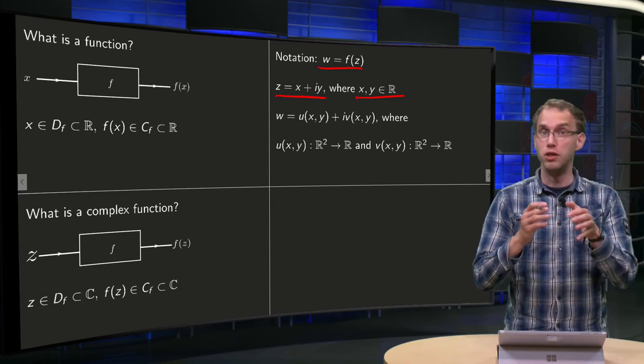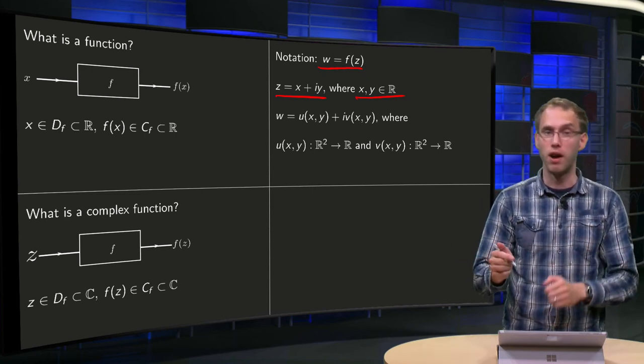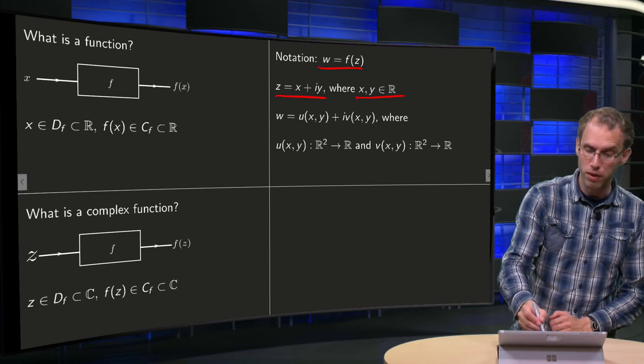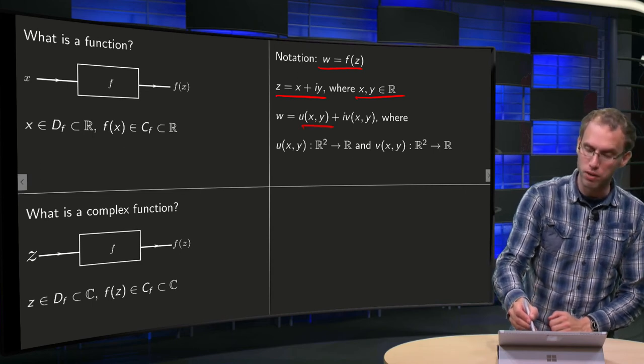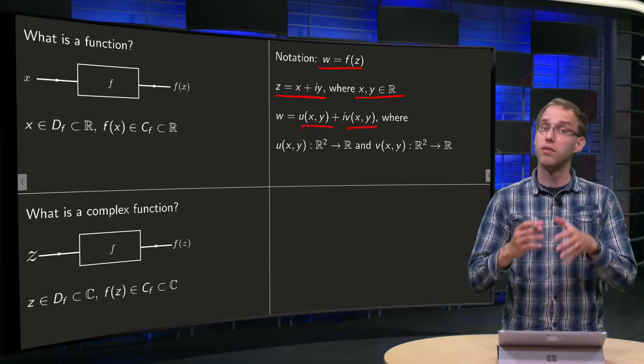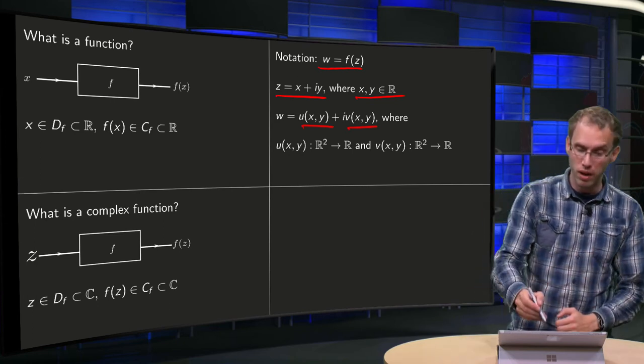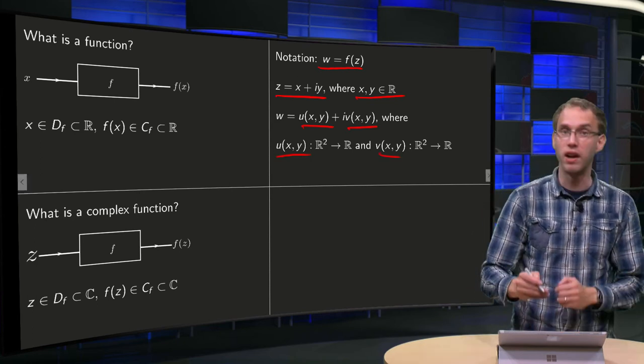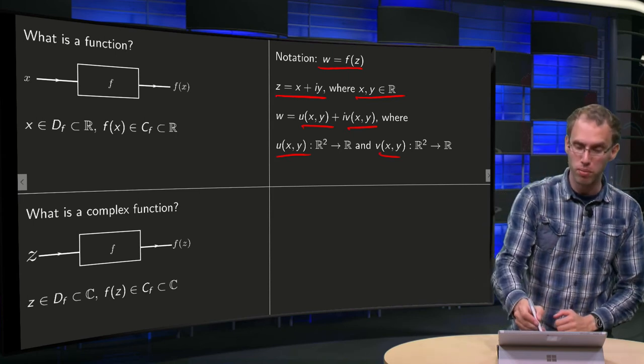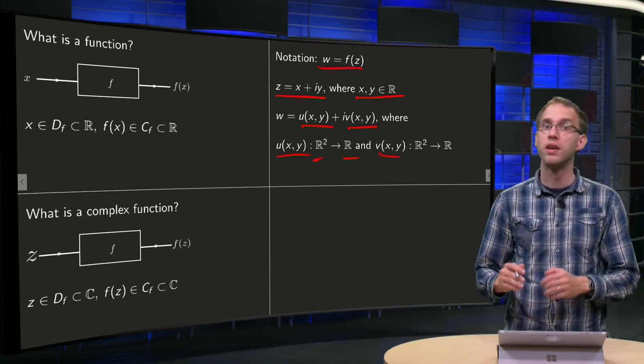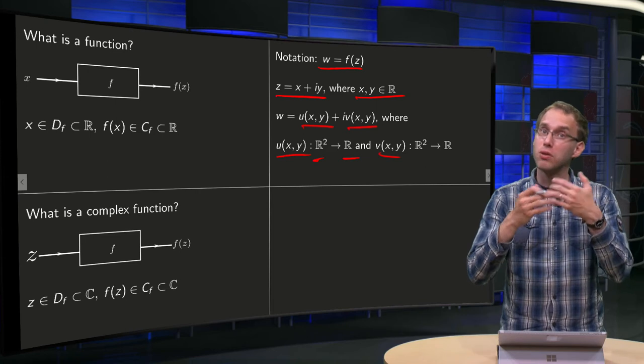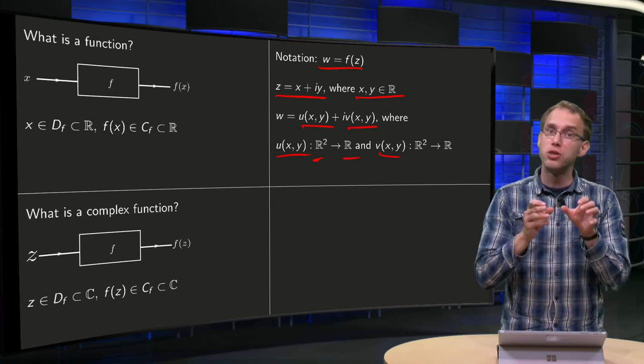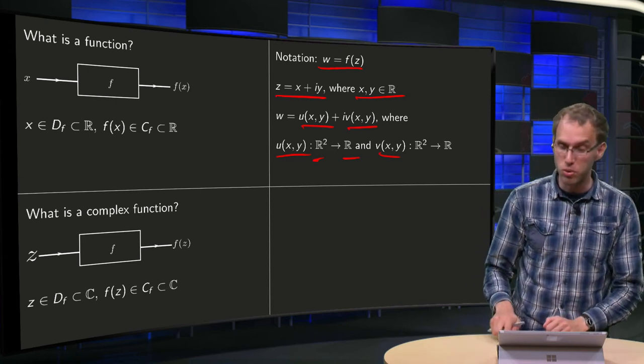We can also split w into its real and imaginary parts. We call the real part of w u and the imaginary part v, which both depend on x and y. So u and v are functions from R² into R. We can split any complex function into real functions of two variables.